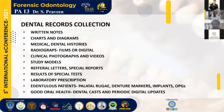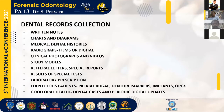For proper identification, we need systematic dental records. These dental records would include written notes, charts and diagrams, medical and dental histories, radiographs which may be films or digital, clinical photographs and videos, study models, referral letters, special reports, results of special tests, and laboratory prescriptions. In the case of edentulous patients, palatal rugae, dental markers, and implants act as dental records. In people with good oral health, dental cast fabrication and periodic digital updates can be used.